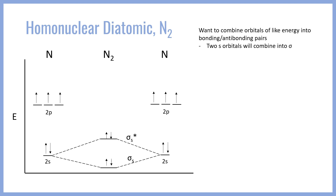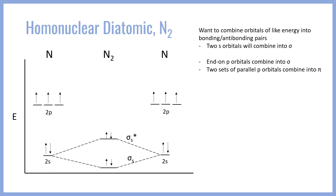In addition to the s orbitals, we also have the sets of three p orbitals to work with. Geometrically, one set of p orbitals can end-over-end overlap to combine into a sigma bond, whereas the other two sets of parallel p orbitals will combine into pi bonds. The end-over-end overlap is going to give us a sigma p and a sigma p star in the diagram.